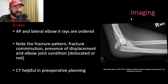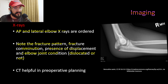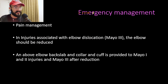For imaging in olecranon fractures, we order anteroposterior and lateral elbow x-rays, noting the fracture pattern, comminution, displacement, and elbow joint condition. On the lateral elbow x-ray shown here, there is an olecranon process fracture of two fragments with displacement, which would be classified as Mayo Type 2a. CT scan is helpful in pre-operative planning.